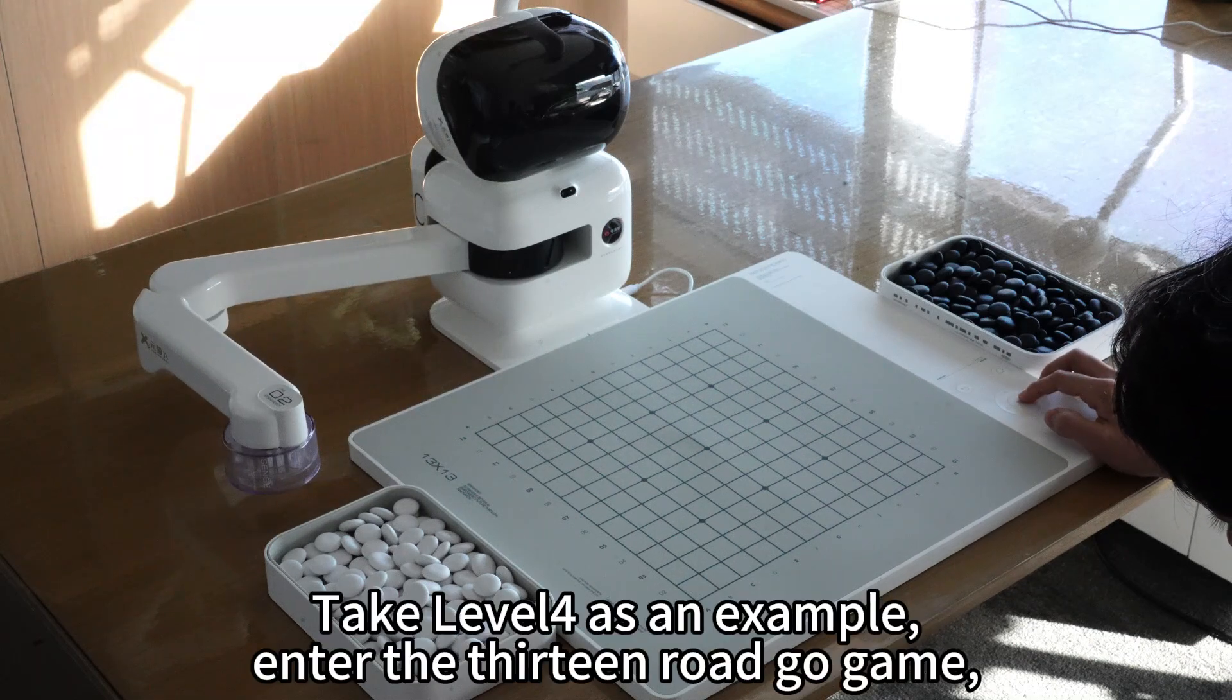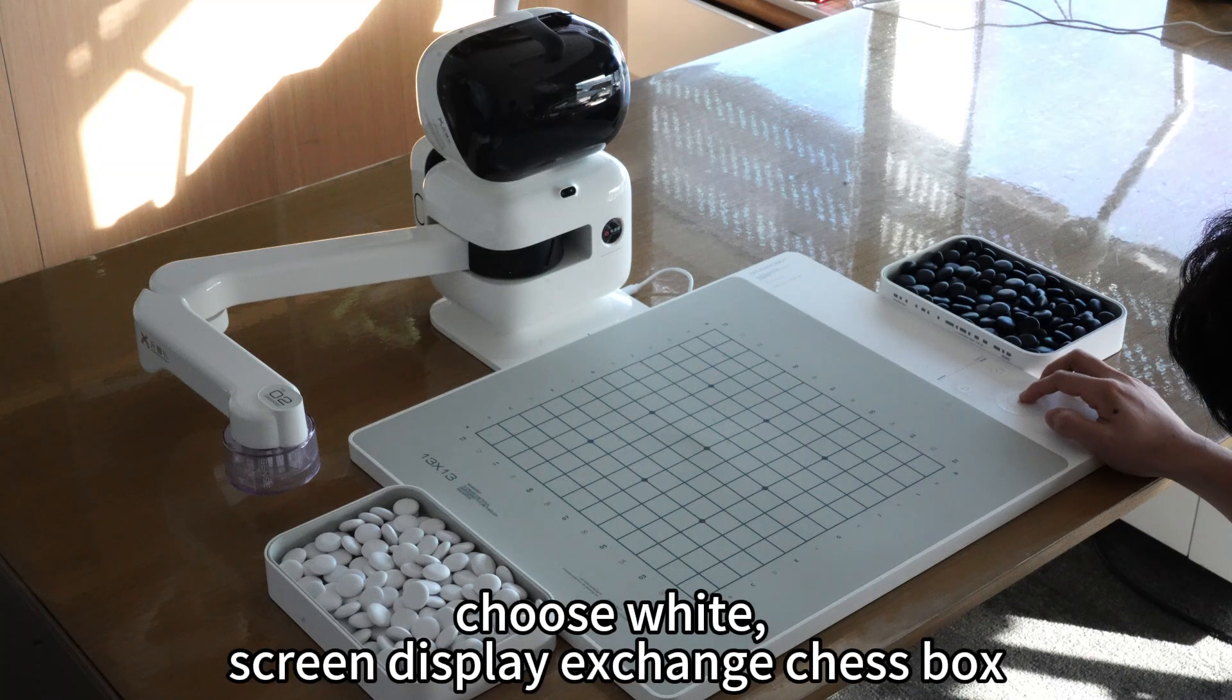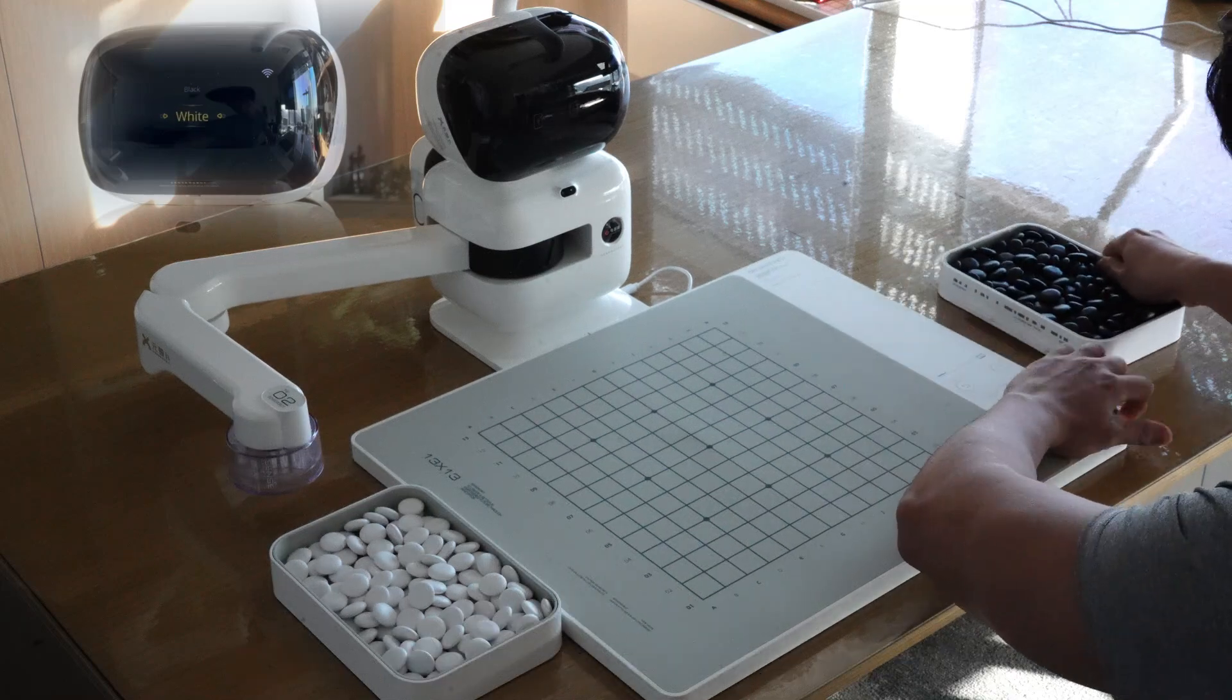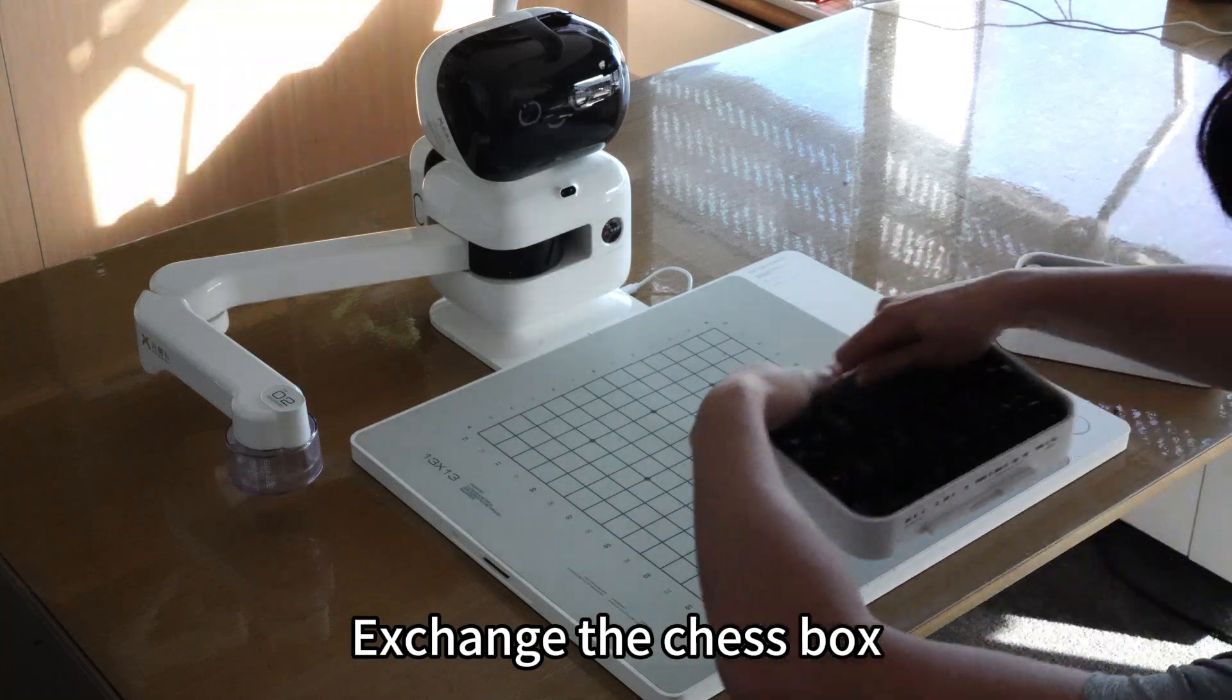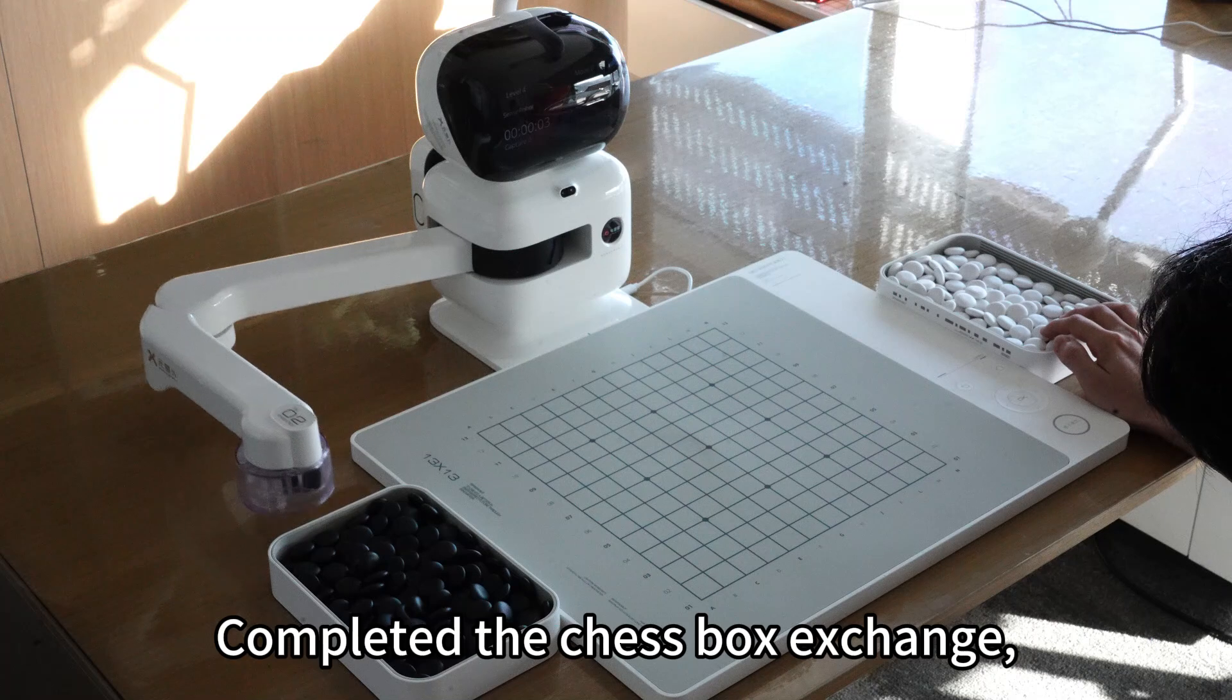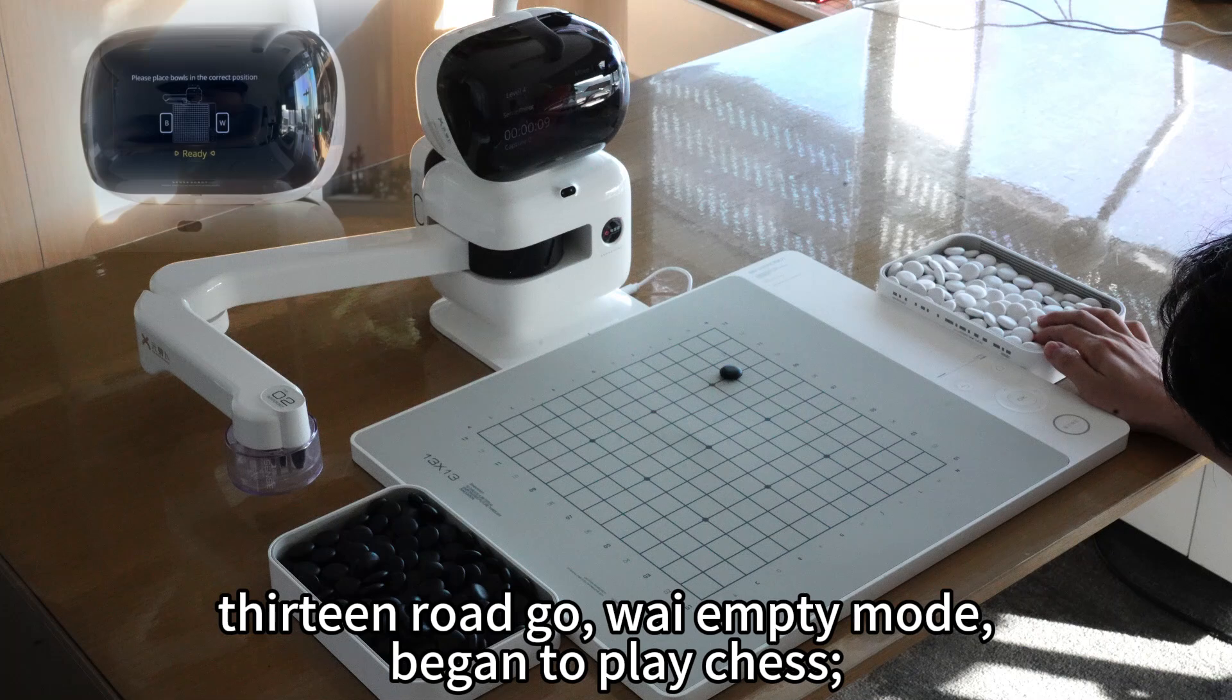Take level 4 as an example. Enter the 13-row Go game. Choose white. Screen displays exchange chess box. Exchange the chess box. Completed the chess box exchange. 13-row Go, Y-empty mode, began to play chess.